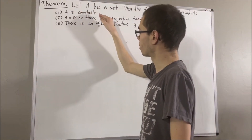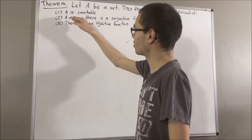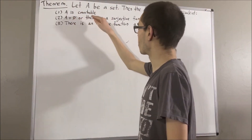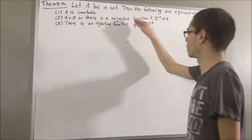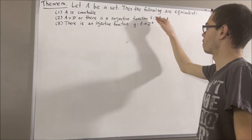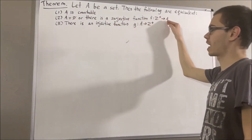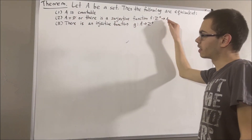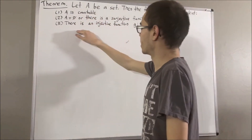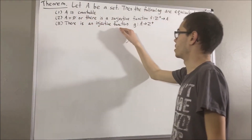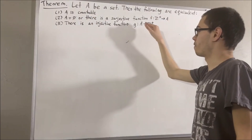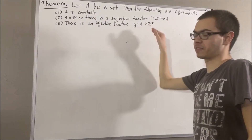A is countable. A is equal to the empty set, or there is a surjective function F from the positive integers to A. There is an injective function G from A to the positive integers.